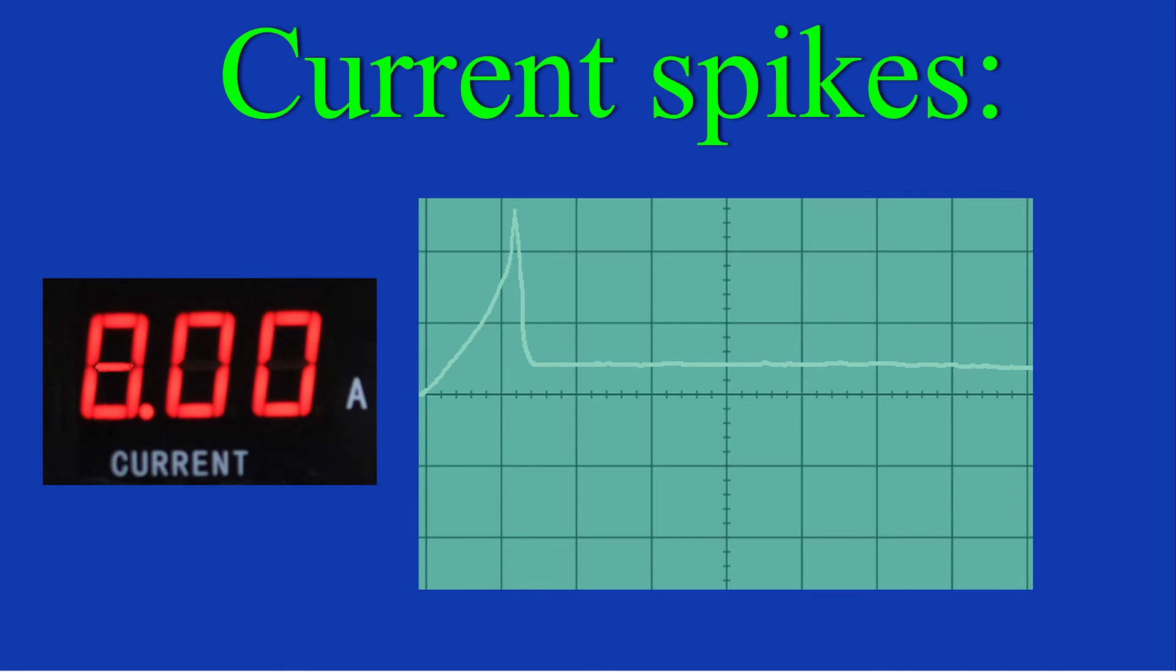A current spike is a sudden increase in current which can be created if a start function consumes a lot of current or if you start a motor.